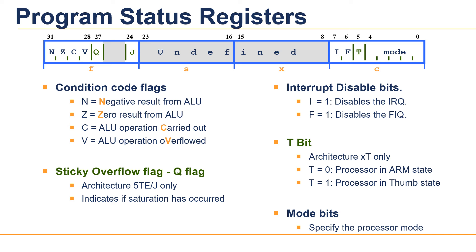Bit 5 specifies Thumb mode or ARM mode. Bits 6 and 7 are used for interrupt control. Bits 8 to 23 are reserved for future use. Bits 27 to 31 indicate the status of the most recent ALU arithmetic and logic operation. Bits 0 to 4 specify the mode of operation of the processor.